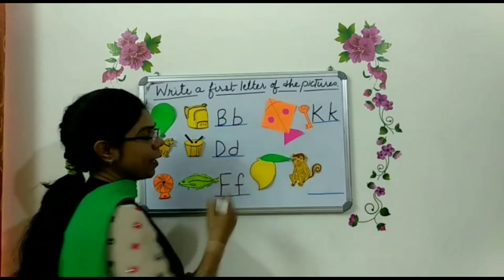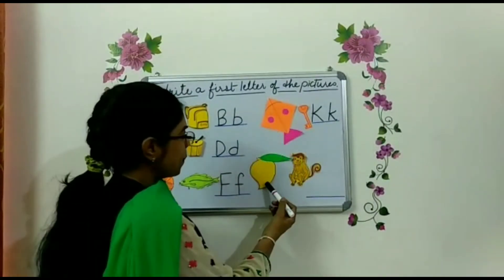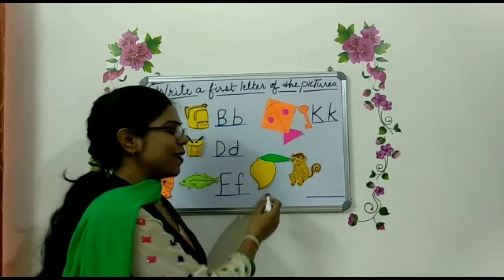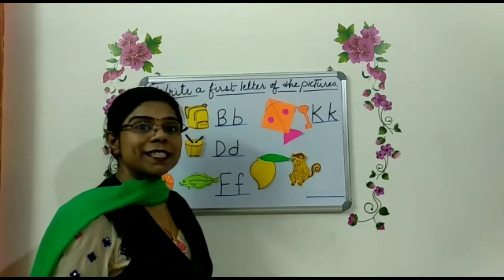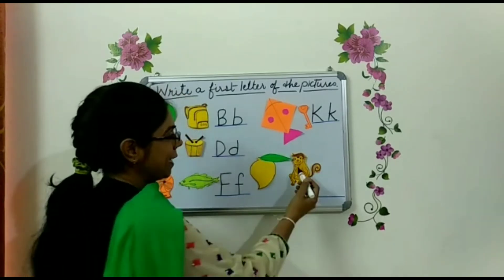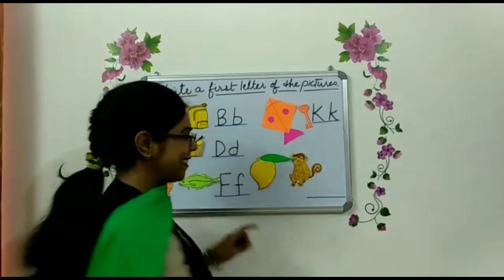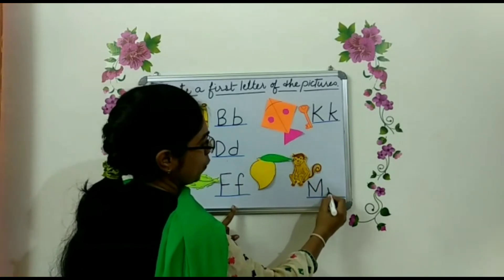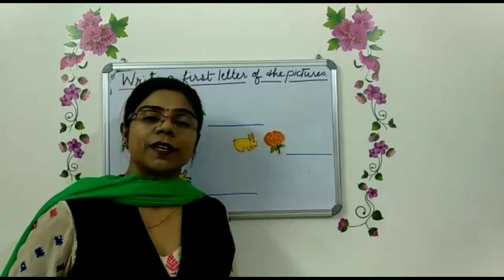And this one? So now children, after key, what is the next picture? Yes, all of you know very well, because this is all of your favorite fruit. What is this? Yes, this is M for mango. And this one? Of course, this is M for monkey. So now M for mango and M for monkey.